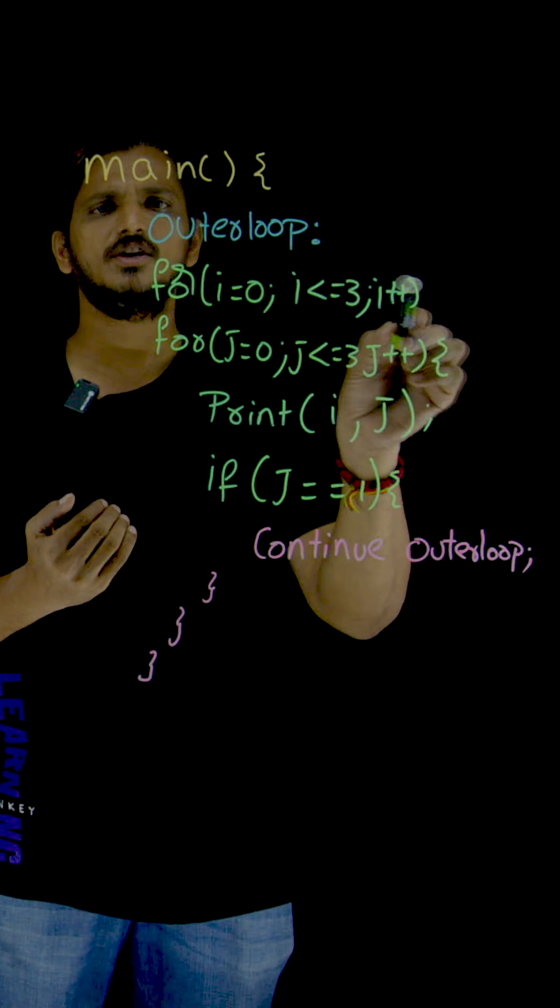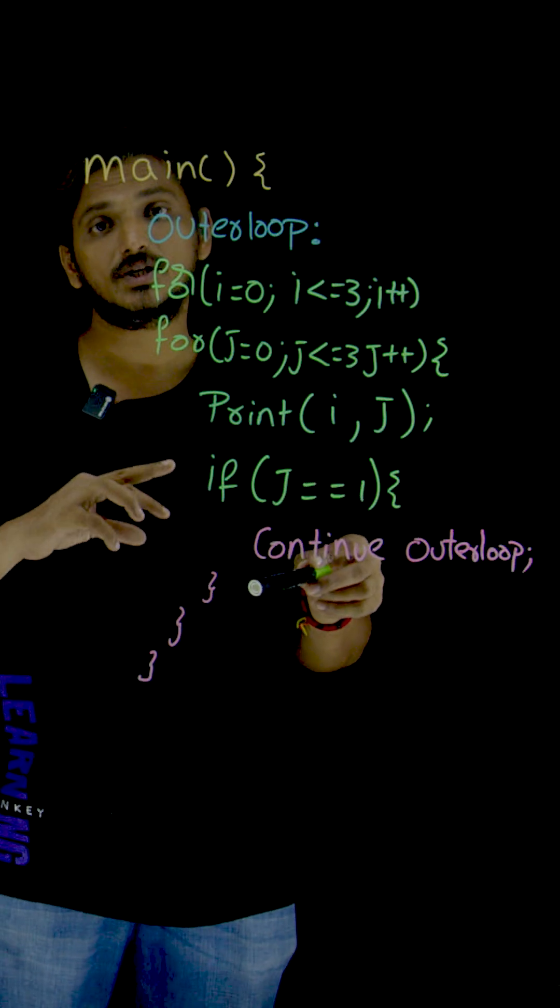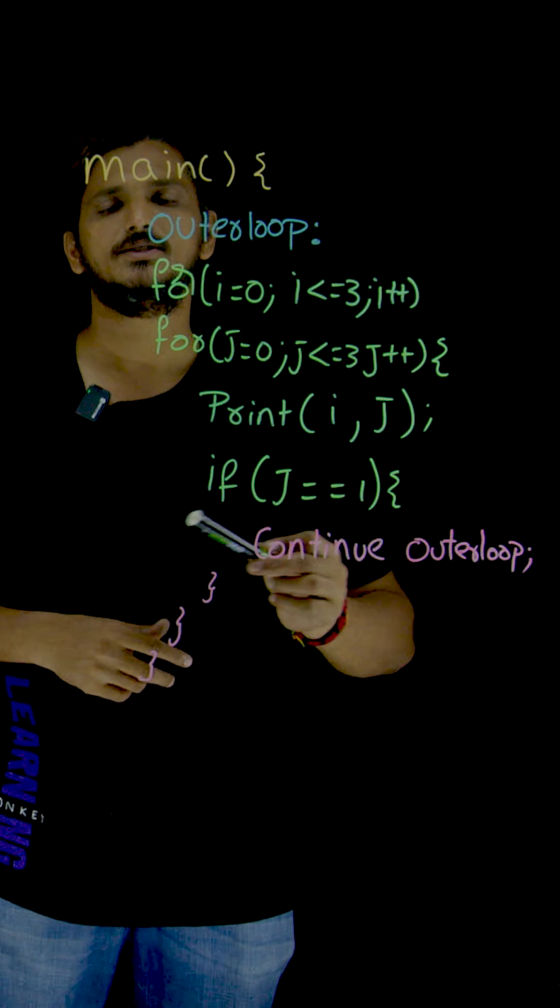Again, 3, 0, 3, 1. This is how we are going to skip the outer loop using the label statement.